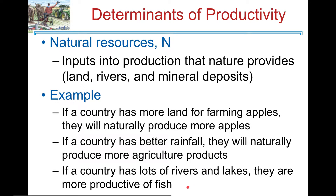Or if a country has lots of rivers and lakes — or if a state like Minnesota has 10,000 lakes — then they're better at producing freshwater fish.